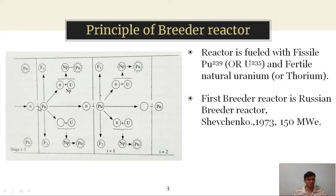Plutonium is bombarded with a neutron, and after bombardment, it produces its fissionable products along with the release of three neutrons. One neutron takes part in a chain reaction, and the other two neutrons are captured by natural uranium, that is uranium-238. After capturing, it forms neptunium, which gets converted into plutonium-239. This chain process continues and as a result, we get a fissile material, that is plutonium-239.